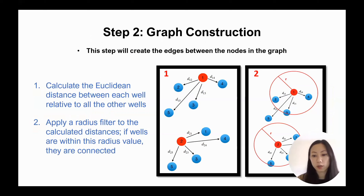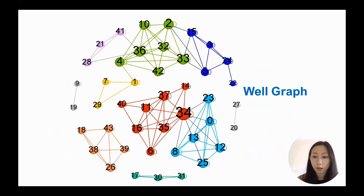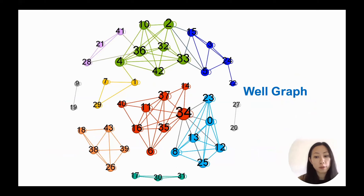Step two is graph construction. Using the spatial data, we calculate Euclidean distances between each well and all other wells, then apply a radius filter. If wells fall within the radius cutoff, they are connected and we draw an edge between them; if they fall outside, they are not connected. This graph is a projection of the connectivity of our wells, with neighborhoods shown in separate colors. I want to note that this graph has no basis in the physical locations of the wells — it is simply a projection of connectivity.